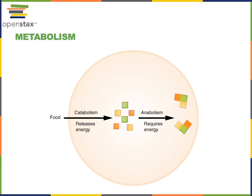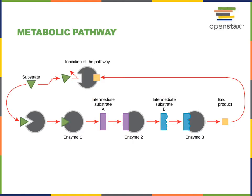There's catabolism, which are the chemical reactions that break down large molecules into smaller molecules and release energy, and anabolism, which are the chemical reactions that build large molecules from smaller molecules and requires the input of energy.